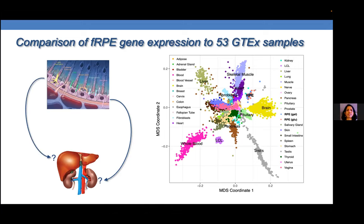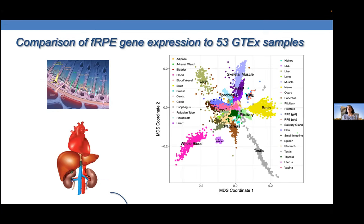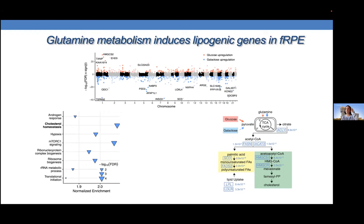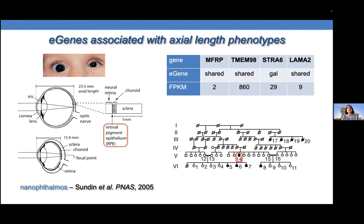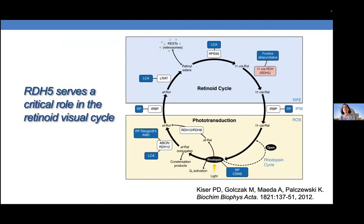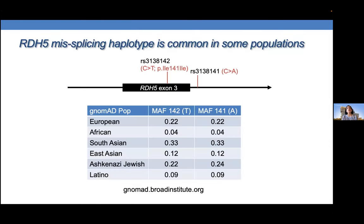Great talk, Doug. You talked about the RDH5 eQTL — I just checked the frequency and it's about 10 percent in South Asians. Given its likely result in nonsense-mediated decay, with the endogamous nature of populations in the South Asian region, do you expect to see this haplotype at higher frequency in patients with inherited retinal disease?